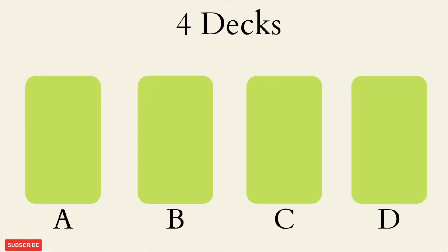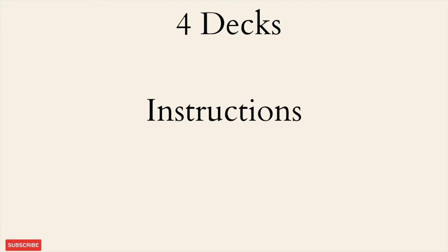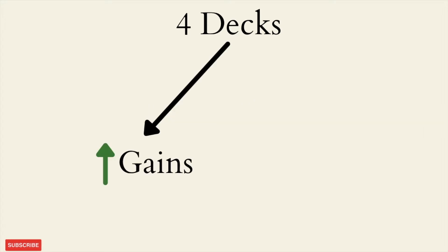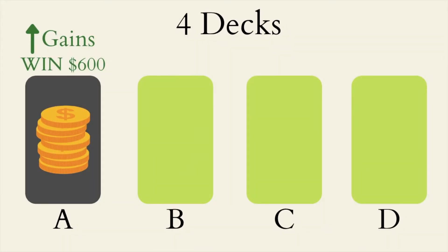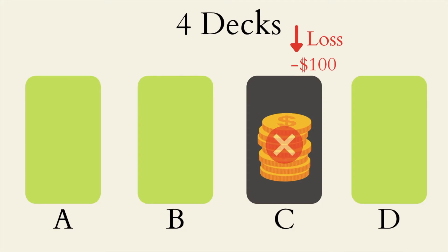Participants are then presented with four card decks, labeled A, B, C, and D. They are instructed to successively choose cards from each of the four decks with the goal to maximize their long-term gains while simultaneously minimizing their losses. The task is built such that each card from each deck is associated with a specific amount of monetary reward and potentially a monetary loss as well.